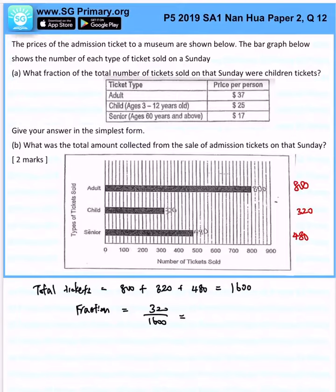We will slowly divide them. 32 over 160, 2 over 10, 1 over 5. Now let's look at part b.